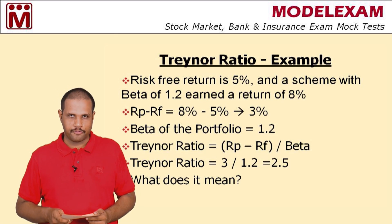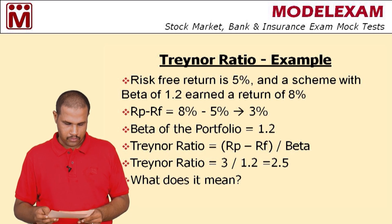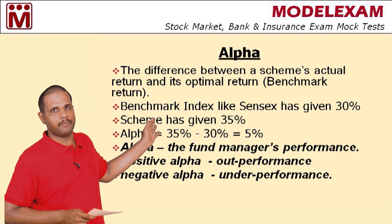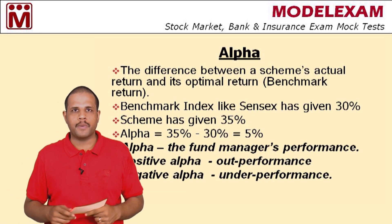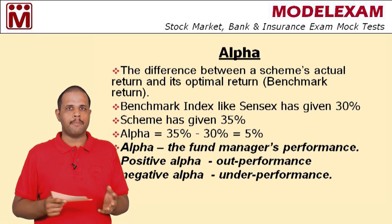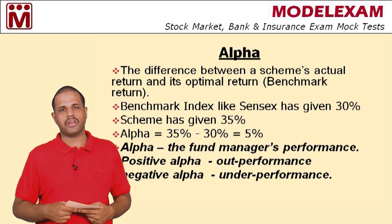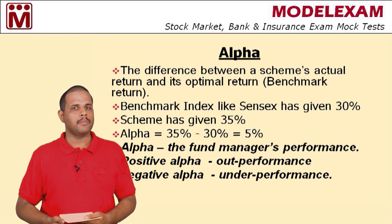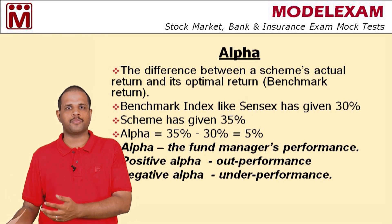We have one more risk adjusted performance measure known as alpha. Alpha is the difference between a scheme's return and its benchmark return. Every scheme is compared with a market index, which is known as the benchmark. For example, Sensex, Nifty, BSE 100, and BSE 200 are all benchmarks. We compare our scheme return with that of the benchmark return.